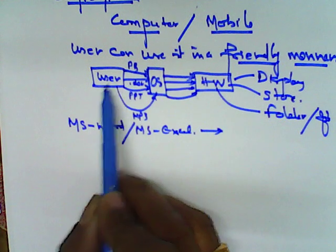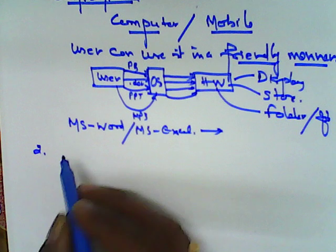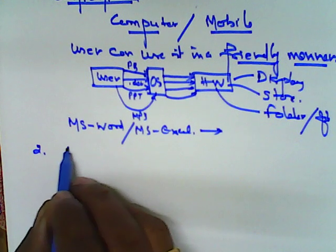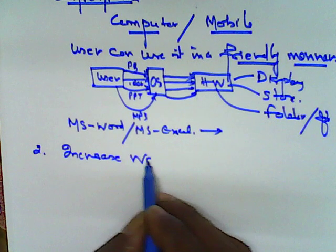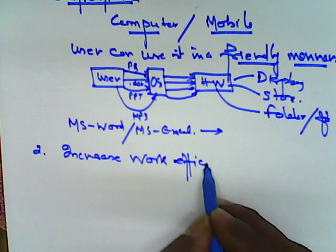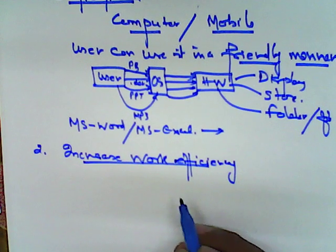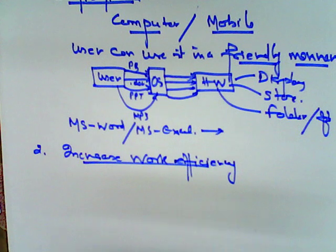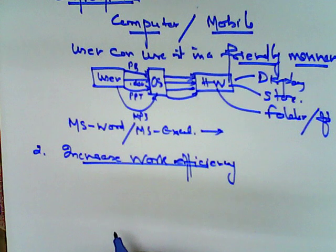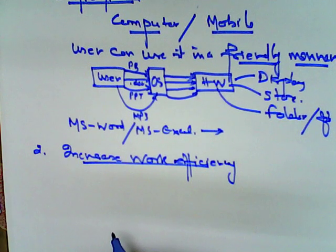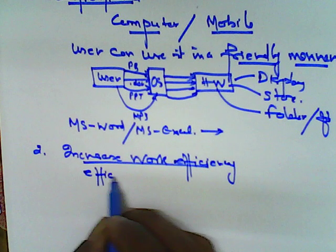Next is that the objective of the operating system is to increase work efficiency. Efficiency is such a word - whenever user does any applications, if that is efficient and if it is able to process in a very speedy manner by the particular computer or any system, then we say that the system is more efficient.